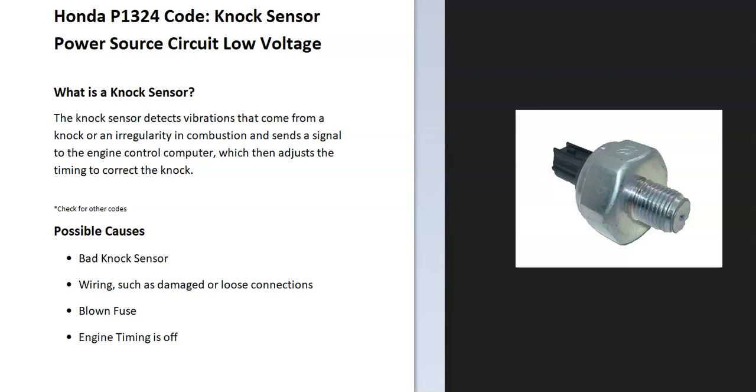One thing to keep in mind with the knock sensor is sometimes timing can get knocked off by something else, like if you have a bad cam sensor or something like that. Sometimes something else can throw off the engine timing, and then the knock sensor is detecting this and the onboard computer is making up for it. Always be sure to check for other codes. If you're getting another code for a cam sensor or a crankshaft position sensor, be sure to look at those.